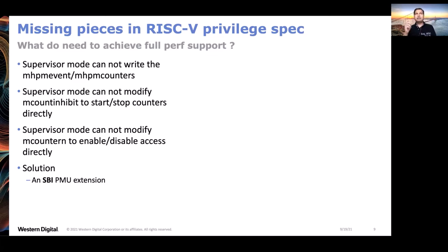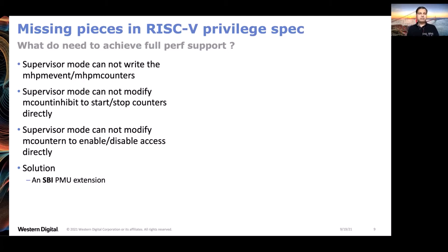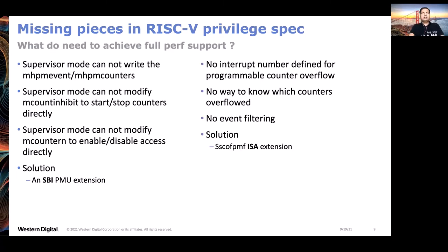The SBI is basically an interface between supervisor mode and machine mode. Any privileged operations that supervisor mode cannot do - SBI calls allow supervisor mode to execute those functions in M-mode on behalf of S-mode. That's why the SBI PMU extension was proposed and is now part of the official SBI specification. However, the SBI extension is not always sufficient because there are other supports we need from the privilege spec itself. To support counter overflow, we do not have an interrupt number, so we need an interrupt number from the privileged specification for counter overflow.